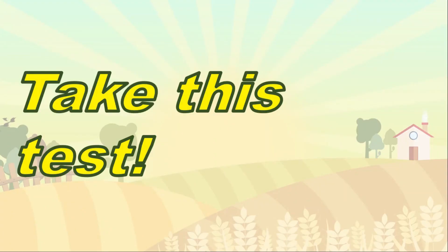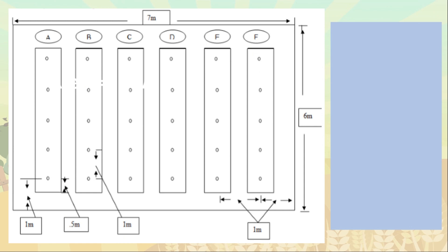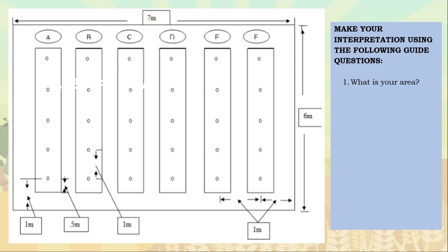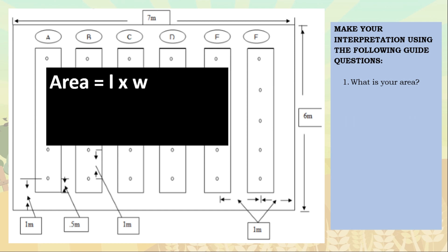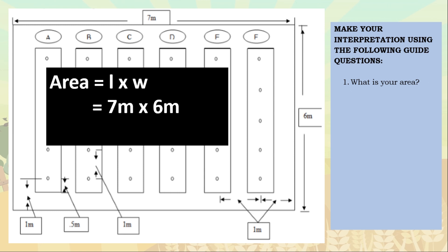In order to determine our basic knowledge and calculation, let's take this test first. We have a sample plan for our garden and we'll make our interpretation using the following guide questions. First, what is the area? The formula to get the area is length times width. We have 7 meters for the length and 6 meters for the width. Multiplying both gives us 42 square meters.